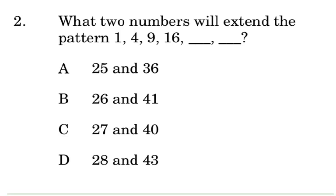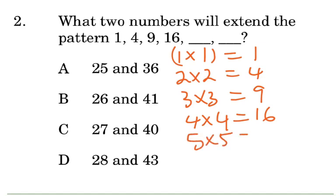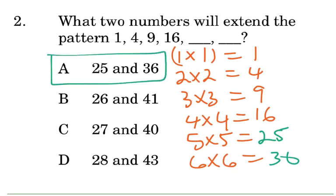What two numbers will extend the pattern? Always look at the relationship. What type of numbers are we looking at? If your answer is that we are looking at squared numbers, then you are correct. Therefore, 1 times 1 gives us 1, 2 times 2 gives us 4, 3 times 3 gives us 9, and 4 times 4 gives us 16. So 5 times 5 gives us 25, and 6 times 6 gives us 36. Therefore our answer is A.